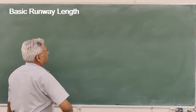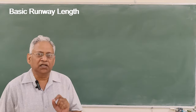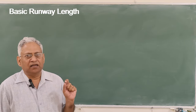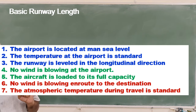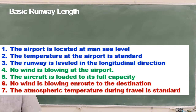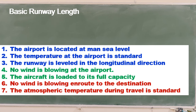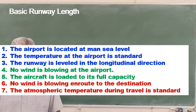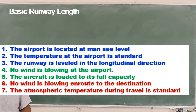Basic runway length is defined under certain assumed conditions at the airport. Number 1: airport altitude is at sea level. Number 2: temperature at the airport is standard, that is 15 degrees centigrade. Number 3: the runway is leveled in the longitudinal direction, meaning there is no gradient. Number 4: no wind is blowing — completely calm condition. Number 5: aircraft is loaded to its full capacity. Number 6: no wind is blowing on the way to the destination.